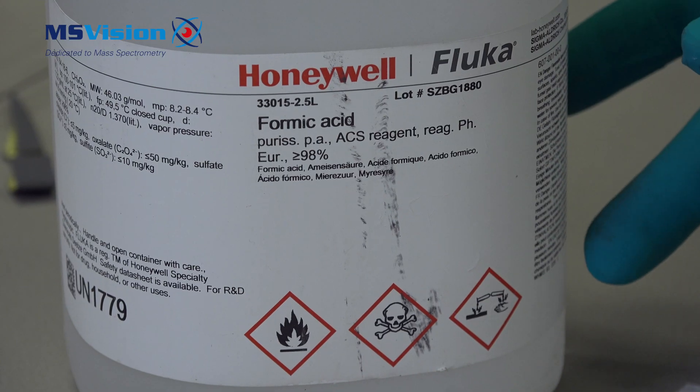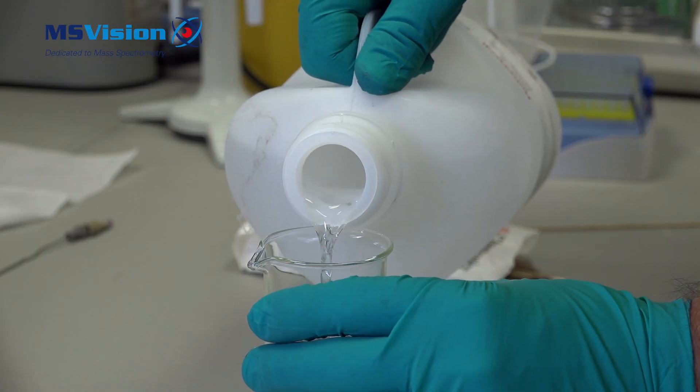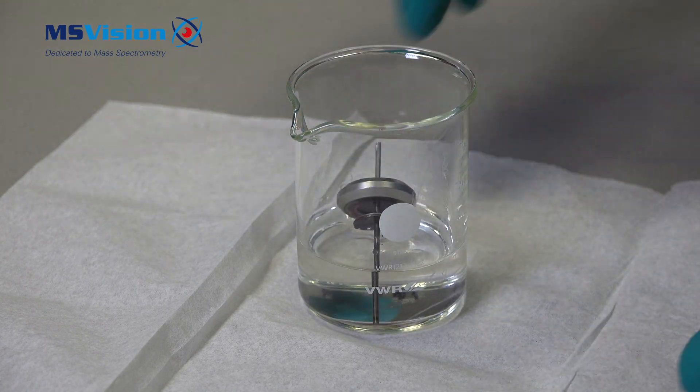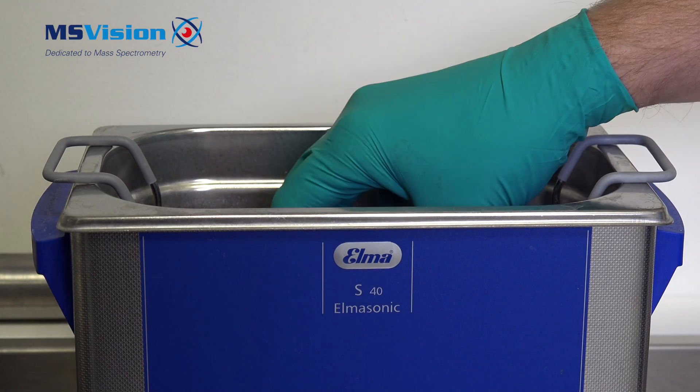Then carefully, partially fill a glass beaker with formic acid, placing the filament inside. Add water to the beaker and sonicate for 10 minutes.